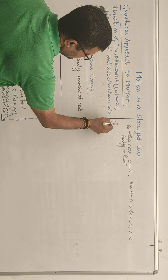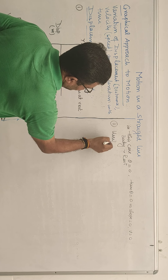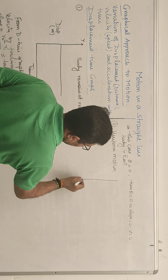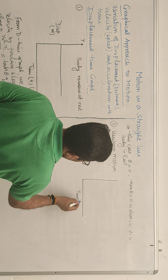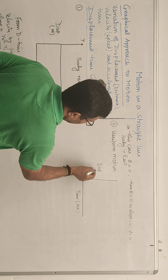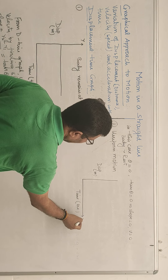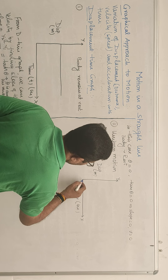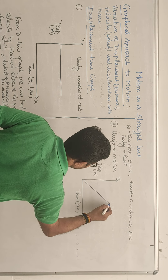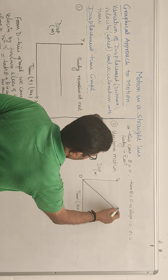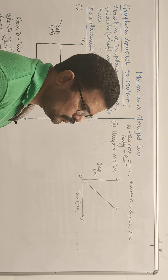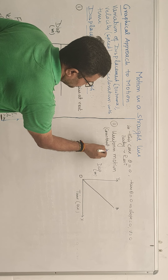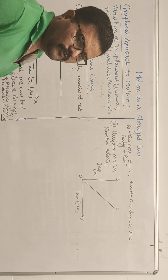The second displacement-time graph is for uniform motion. In uniform motion, you cover equal displacement in equal intervals of time, so the graph moves away from both the x and y axes as a straight line. Uniform motion means the body has constant velocity.